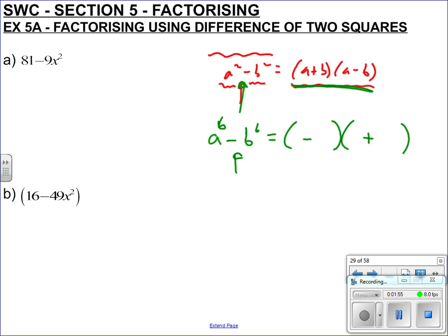So if I go back to here, notice if we expand this out, we get a squared, and a times minus b is minus ab, and here if we do plus b times a, that's plus ab, and plus b times minus b is minus b squared. So notice these two middle terms cancel out. That's the whole point, that's what's happening, and the only way that's going to happen is if you have a difference of two signs in here.